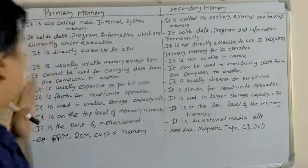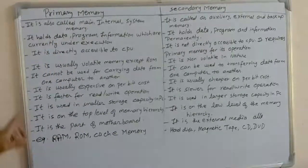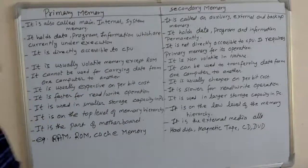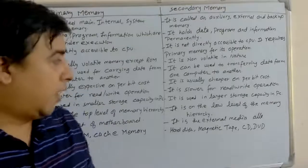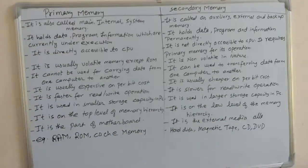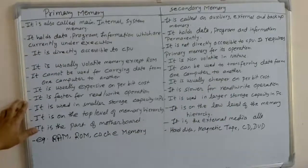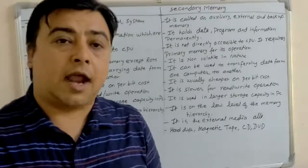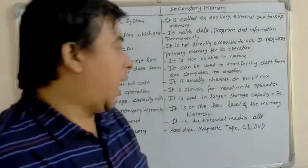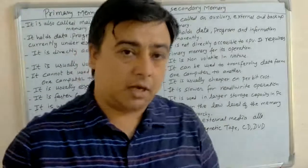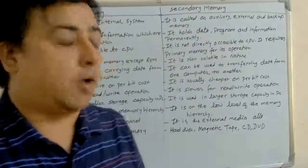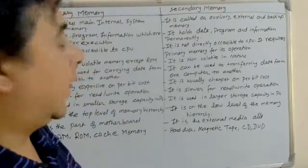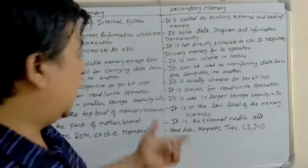By using primary memory, we cannot transfer data. Primary memory is faster for read-write operations, but secondary memory is slower for read-write operations, because secondary memory requires primary memory for its operation — that's why it is slower.